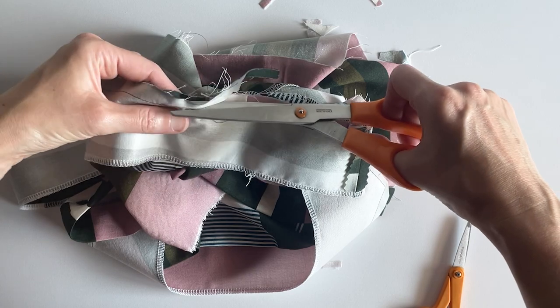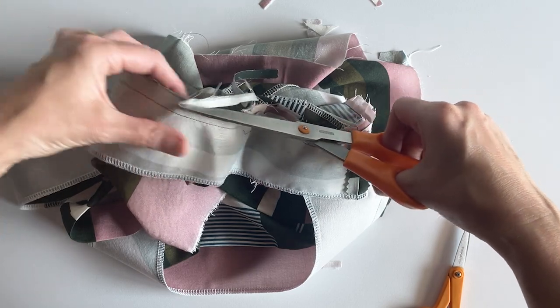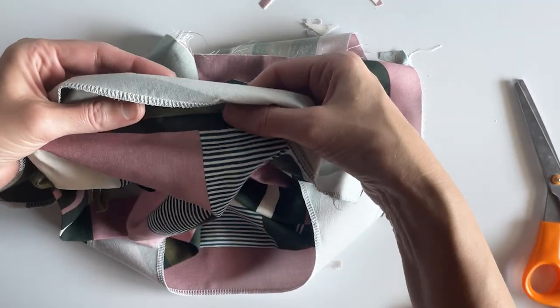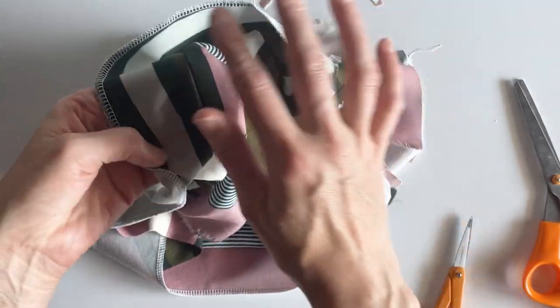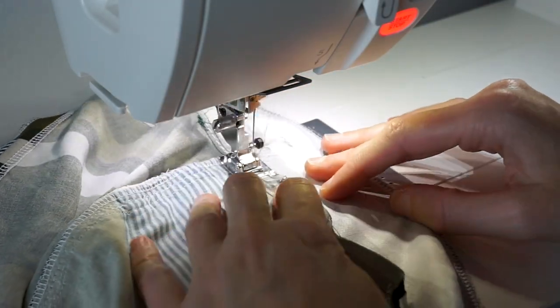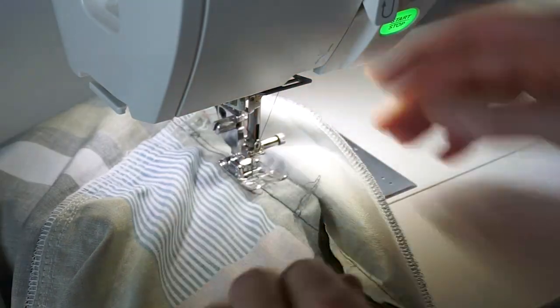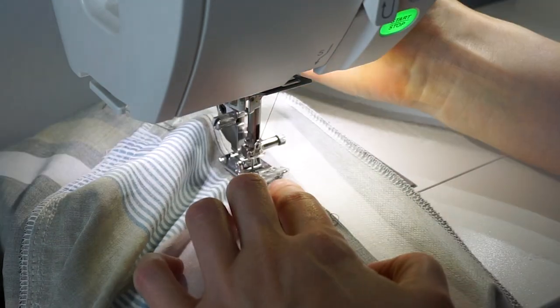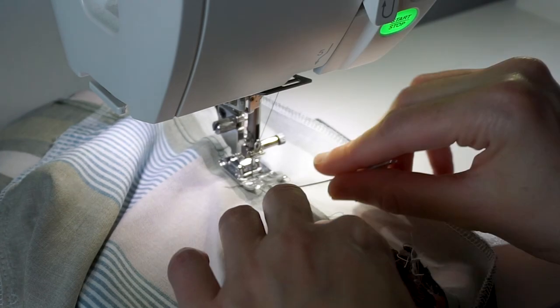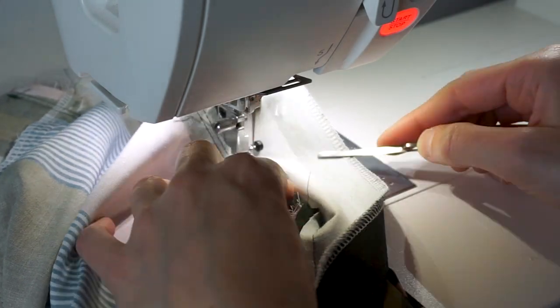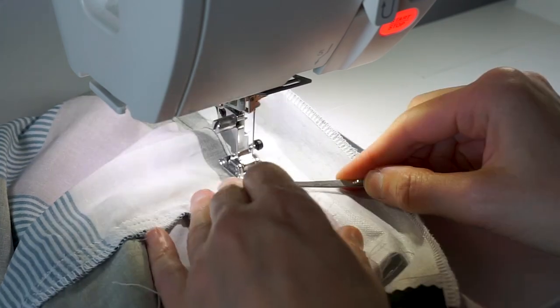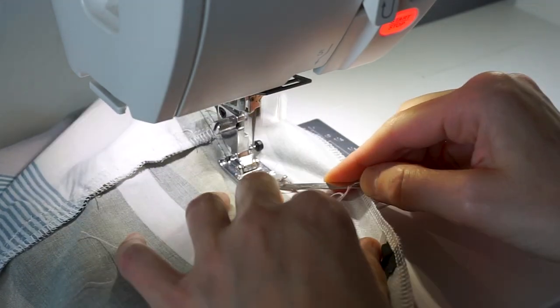After I have this all trimmed and graded, I'm going to give it a quick press. I will press the facing towards the seam allowance and then understitch. Now I'm going to understitch, and what that means is I will stitch the seam allowance to the facing. The stitching is not visible from the outside. You can either do it with the inside on top or the outside of the top on top.